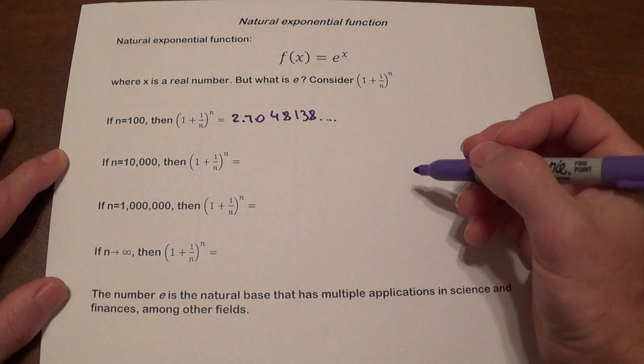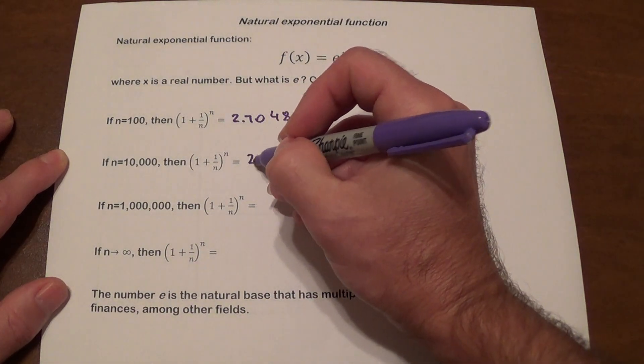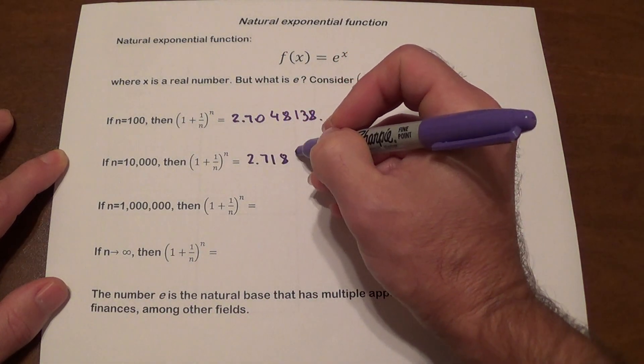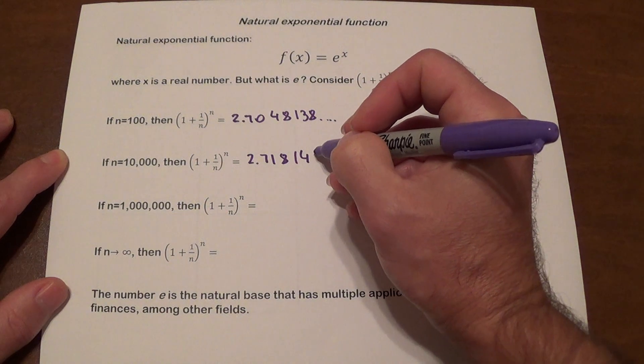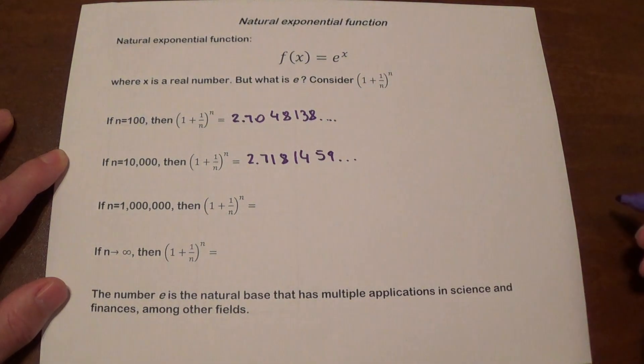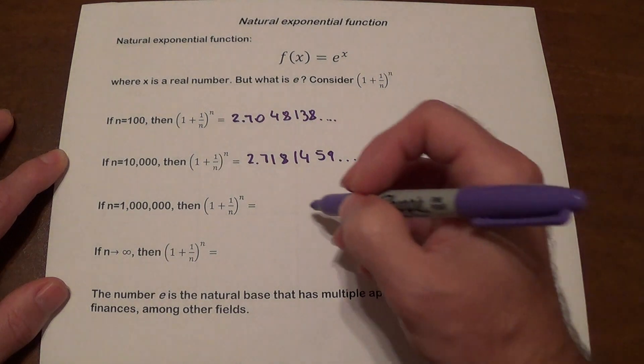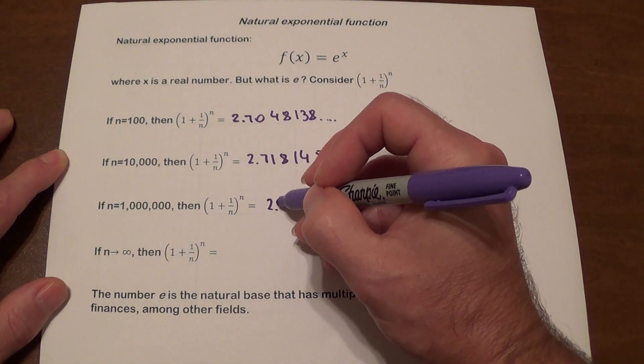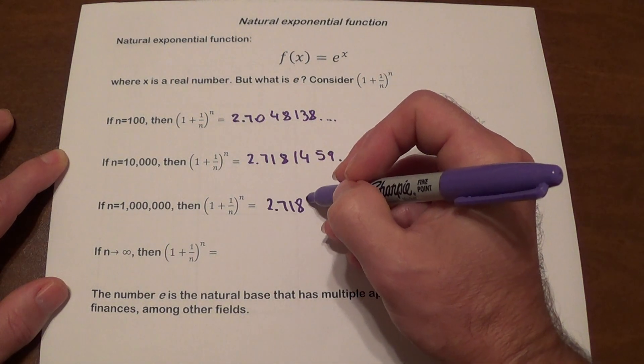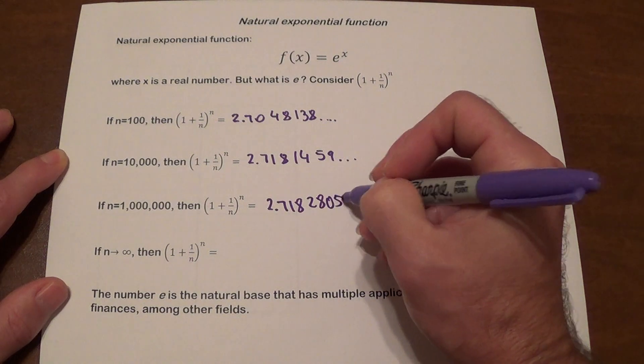When you make n ten thousand, that number is going to be 2.7181459 approximately. When you make n a million, that number becomes 2.7182805 approximately.